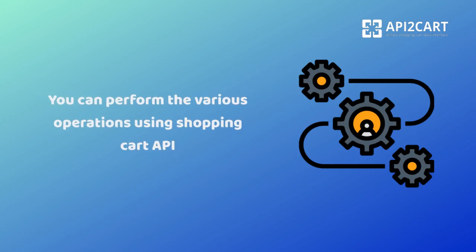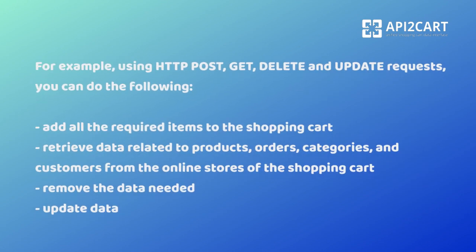You can perform various operations using Shopping Cart API. For example, using HTTP POST, GET, DELETE, and UPDATE requests, you can do the following: add all the required items to the Shopping Cart; retrieve data related to products, orders, categories, and customers from the online stores of the Shopping Cart; remove the data needed; and update data.